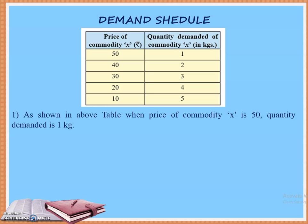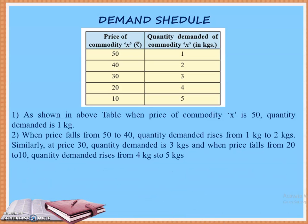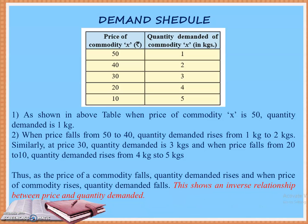टेबल में जब X की price 50 रुपए थी, तो consumer ने एक किलोग्राम demand किया। Similarly, at the price of 30 rupees, quantity demanded is 3 kg, and when price falls from 20 to 10, quantity demanded rises from 4 kg to 5 kg. As the price of a commodity falls, the quantity demanded rises, and when the price rises, the quantity demanded falls.